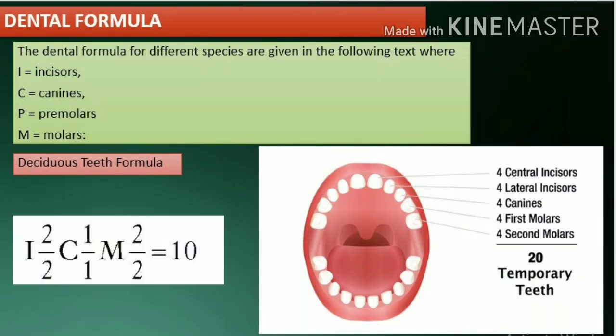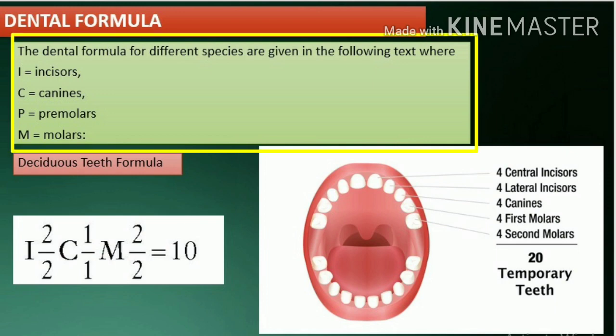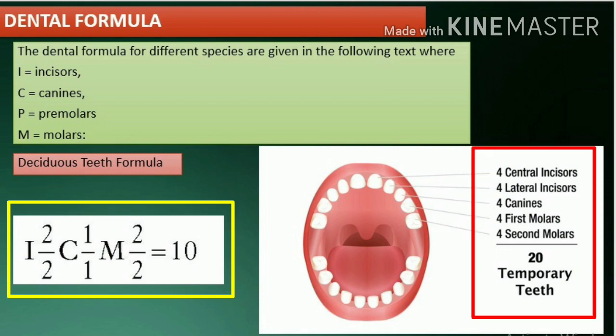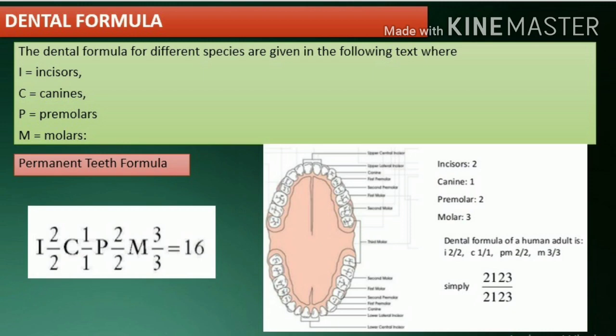Dental formula. The dental formula for Homo sapiens uses the following notation: I equals incisors, C equals canines, P equals premolars, and M equals molars. For deciduous teeth, the teeth present are incisors, canines, and molars — 10 teeth present in each jaw, with a total of 20 deciduous teeth.